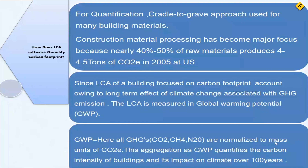By studying these approaches, we understand how they help analyze life cycle energy. Construction material processing has become a major focus because nearly 40 to 50 percent of raw material produces four to four-and-a-half tons of CO2 emissions, according to a U.S. study. Life cycle analysis measures global warming potential (GWP), which normalizes all greenhouse gases — CO2, methane, and NO2 — to mass units of CO2 equivalents. This aggregate quantifies the carbon intensity of a project.